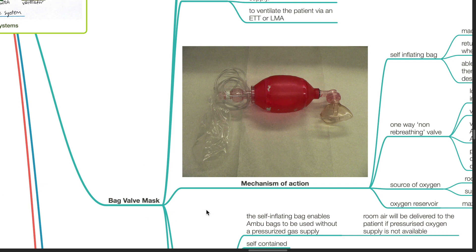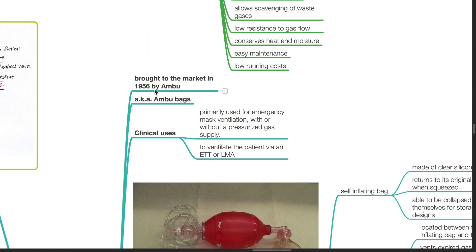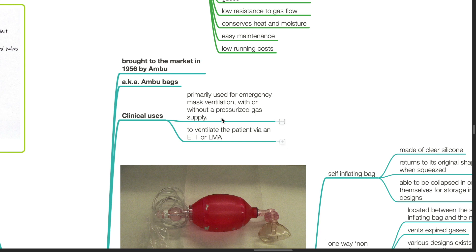Bag valve mask system. It was brought to the market in 1956 by Ambu, also known as Ambu bags. Clinical uses: it is primarily used for emergency mask ventilation with or without a pressurized gas supply, or to ventilate the patient via an ETT or LMA.